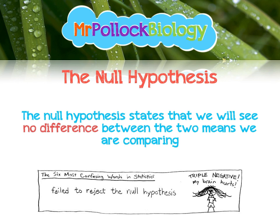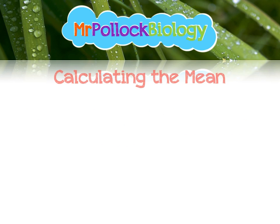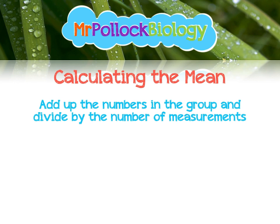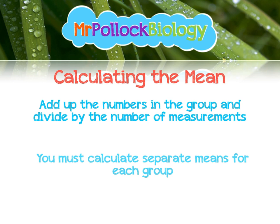From there we go on to calculate the mean. You do need to calculate two means if you're doing two groups of data. So you're going to add up the numbers in the group and divide by however many measurements you took, and you must calculate separate means for each group of data.